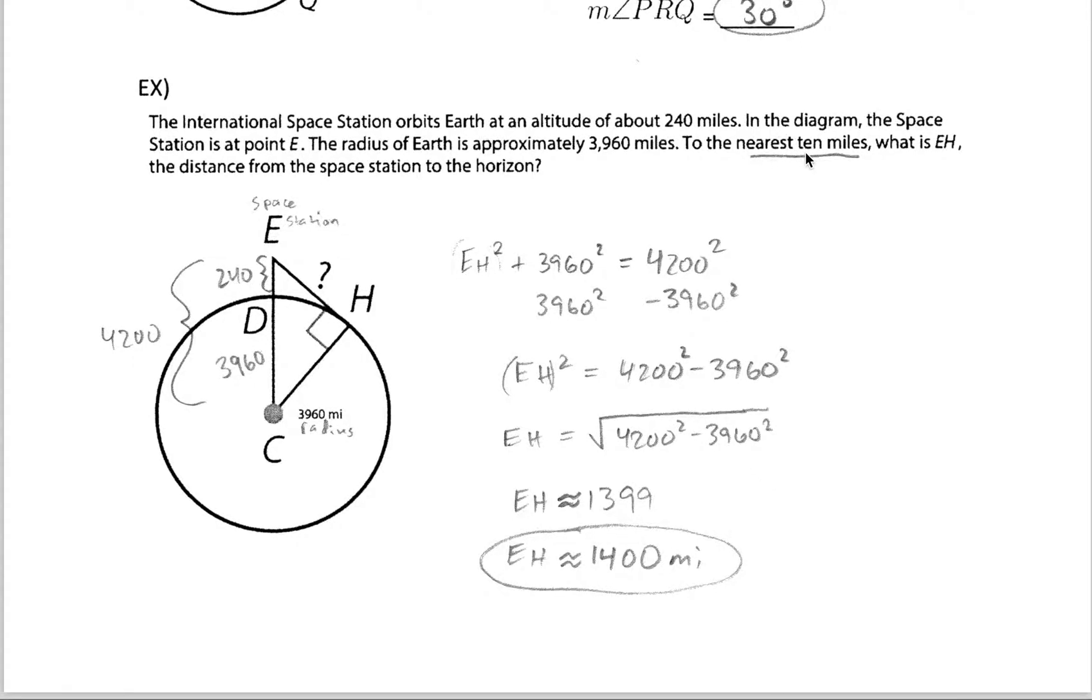We're rounding to the nearest 10 miles, not tenth but 10. So 1399 is going to get rounded up to about 1400 miles. So that's the length from the space station to the horizon point there.